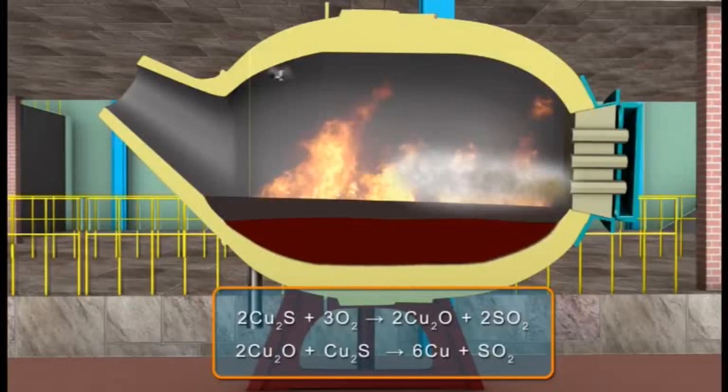2Cu2S plus 3O2 gives 2Cu2O plus 2SO2. Copper oxide is then reduced to copper on further heating. 2Cu2O plus Cu2S gives 6Cu plus SO2.